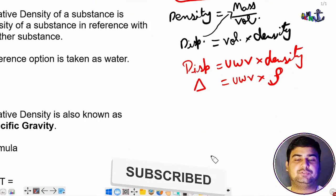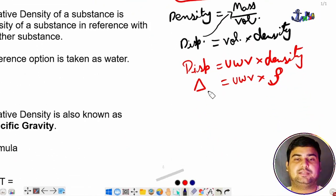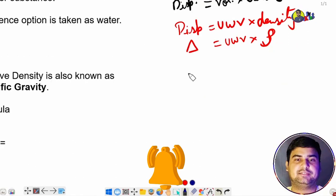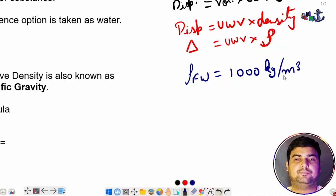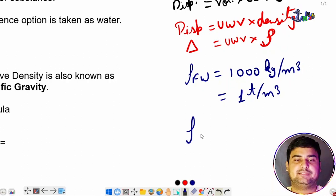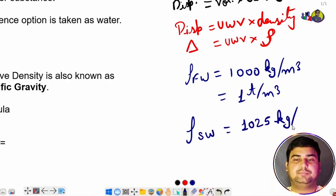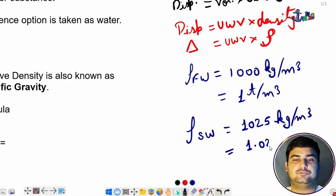Some important density values used in stability: density of fresh water is 1000 kg per meter cube, or 1 ton per meter cube. Density of salt water is 1025 kg per meter cube, or 1.025 tons per meter cube. These values are used throughout our stability sessions.